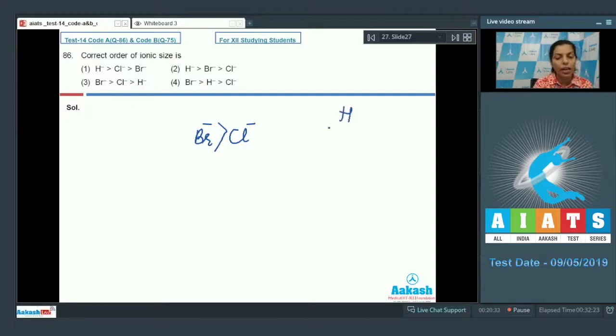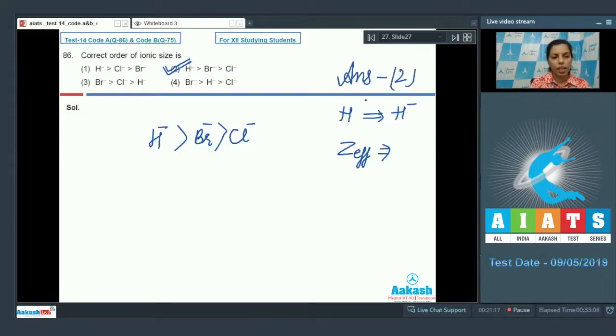But if I talk about hydride ion, hydrogen is a very small atom, but as it gets changed into hydride ion, as Z effective decreases, the size of hydride ion is too large. Even you can say it has more size as compared to bromide ion also. So the order should be this, and yes, on the basis of this, the correct order becomes that's given in option two. I hope it is clear to you.